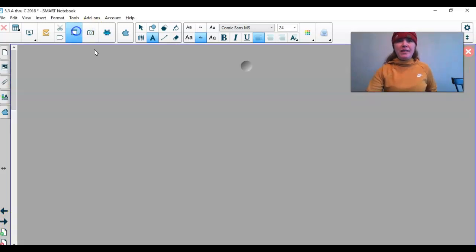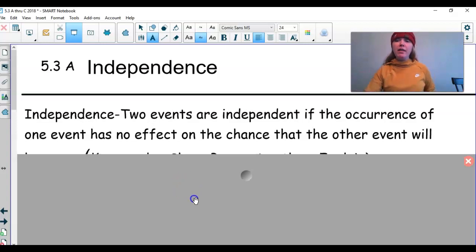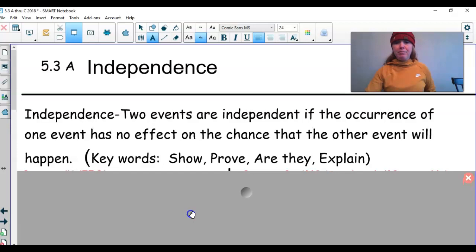What does it mean for two events to be independent? Two events are independent if the occurrence of one event has no effect on the chance that the other event will happen. Some key words when you're asked to prove independence - they may say show two events are independent, prove two events are independent, are they independent, or explain why these two events are independent.